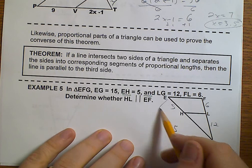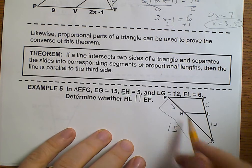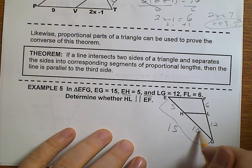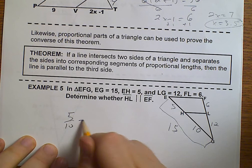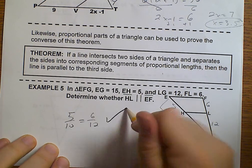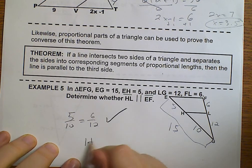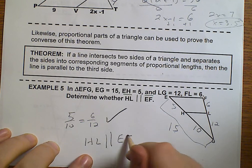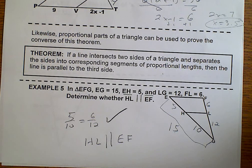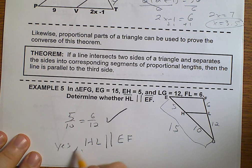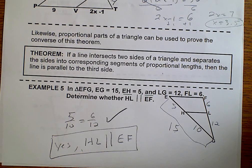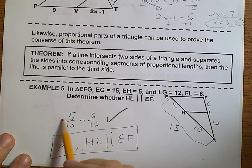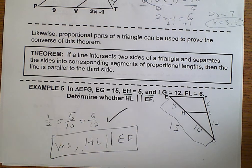Well, the whole thing is 15. 15 minus 5 means that this piece is 10. So does 5 over 10 equal 6 over 12? Yes, it does. So that means that HL is in fact parallel to EF. Now, 5 over 10 is 1 half, 6 over 12, they're both equal to 1 half in case you did not realize that.